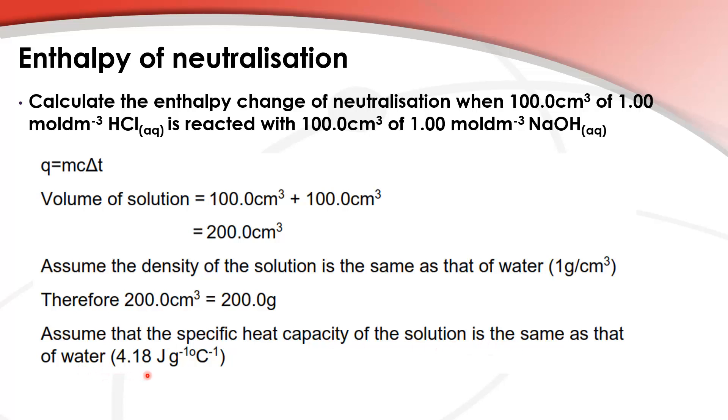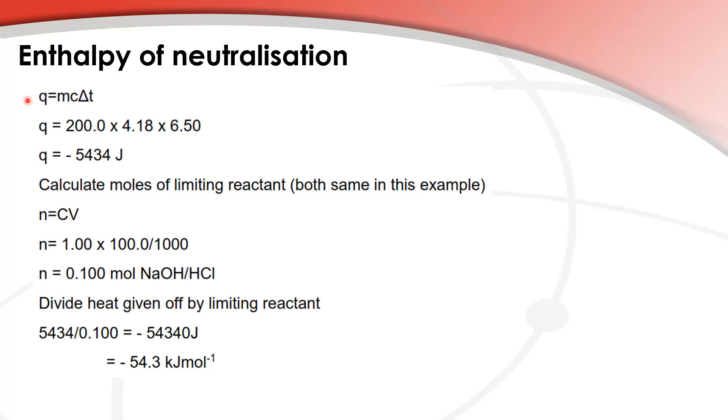Another assumption that we make is that the specific heat capacity of the solution is the same as that of water which is 4.18. So next I'm going to input my values into this equation here. We have 200.0 times 4.18 times 6.50 and that gives us a Q of negative 5,434 joules.